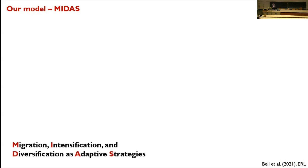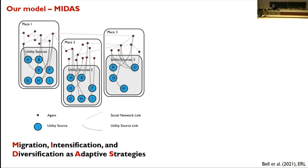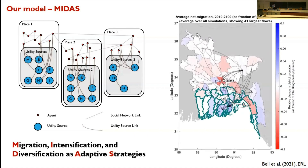Agent-based models, for those who may not be familiar, are tools where we allow individual decision-making agents to interact with each other and their environment, from which emerge system-level properties like migration flows, sediment flows in rivers, agricultural areas, residents being elected, or traffic jams forming. Our model is the MIDAS model — Migration, Intensification, and Diversification as Adaptive Strategies. In the model, individual agents live in places embedded in social networks, deriving utility from different sources — whether those are jobs, assets, or access to natural spaces. They share information and resources across their networks and periodically make decisions about what's the best set of things for them, and if that set of things is somewhere else, they move.